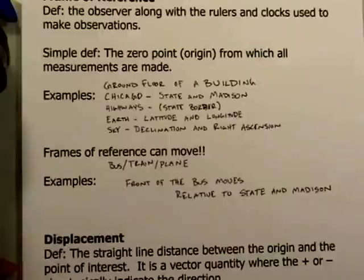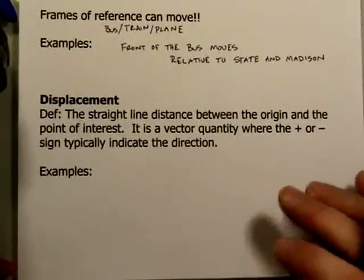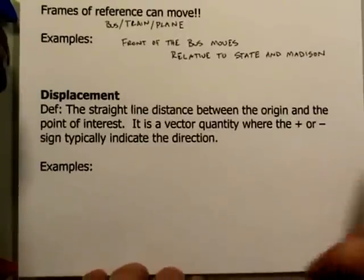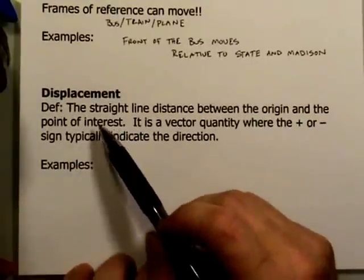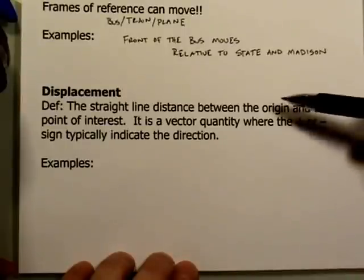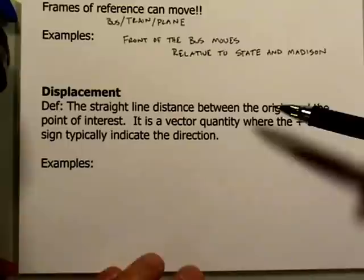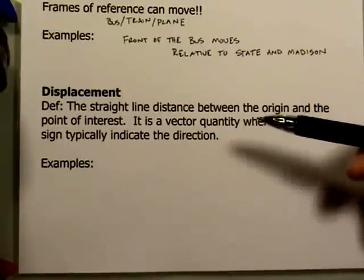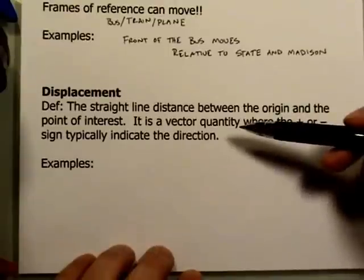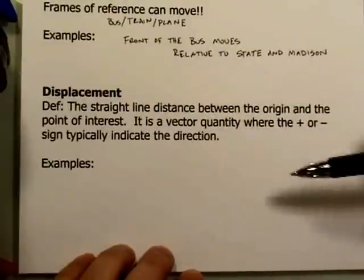For right now, it's enough to understand that the frame of reference is an origin point from which you, as the observer, make all your observations and measurements using rulers, clocks, or any other measuring tools. The second key term in kinematics is displacement. Displacement is very similar to distance but not exactly the same. The definition of displacement is the straight-line distance between the origin and the point of interest.